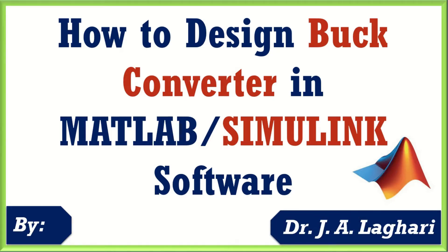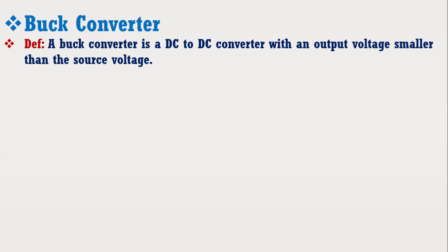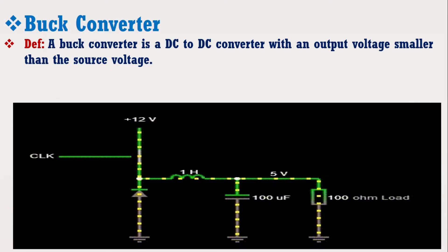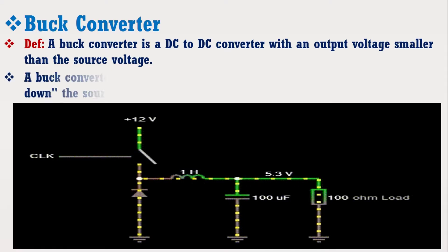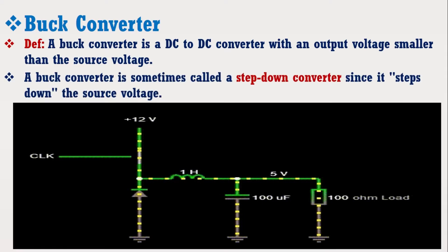A buck converter is a DC to DC converter with an output voltage lower than the source voltage or input voltage, as shown in this animated figure. Due to this reason, a buck converter is sometimes called a step-down converter, since it steps down the source voltage.